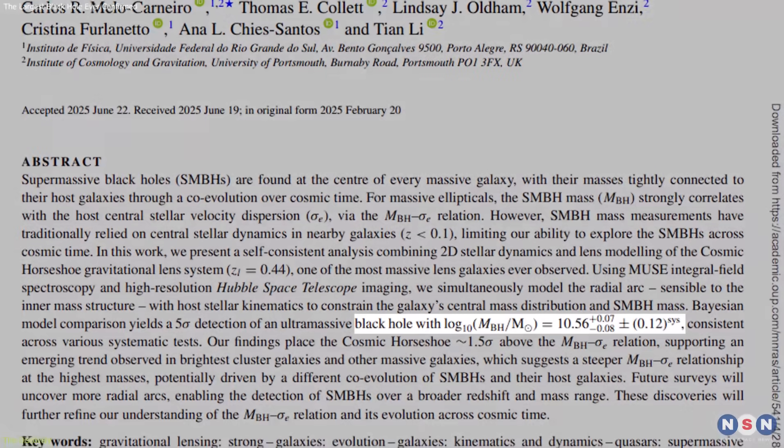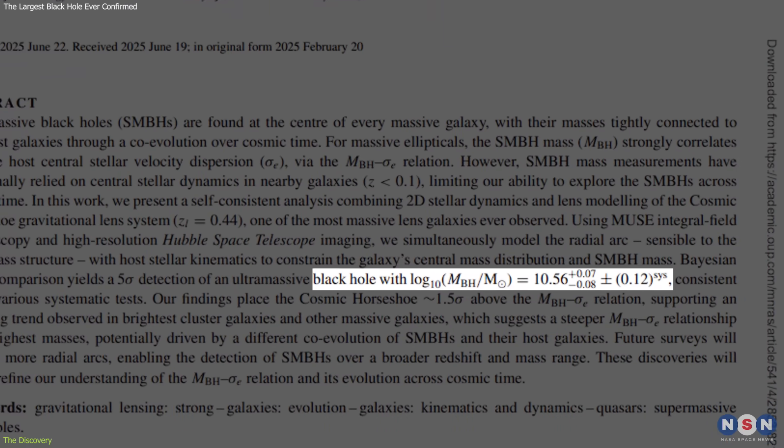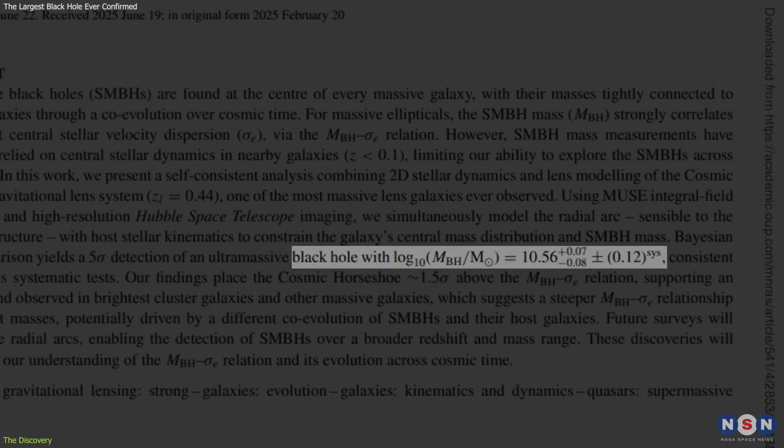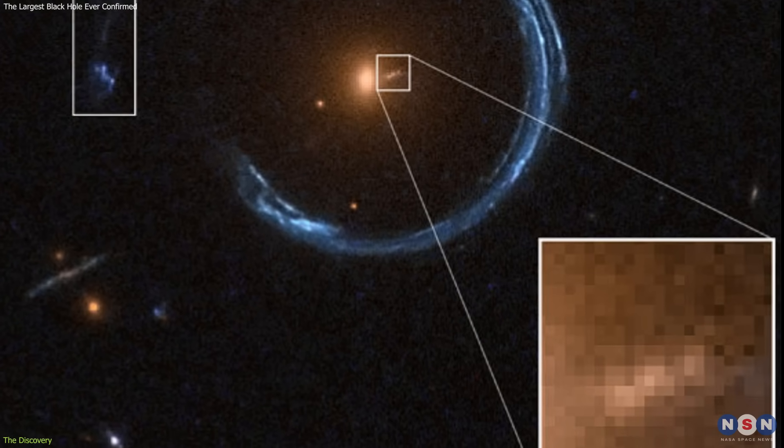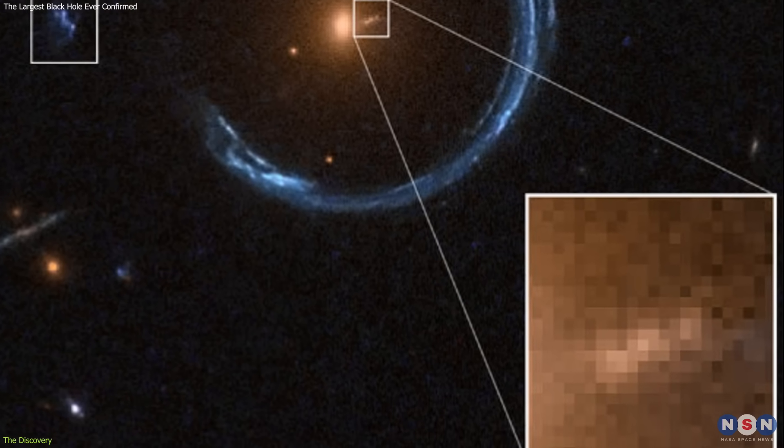The result? A black hole weighing in at about 36 billion solar masses. This figure makes the cosmic horseshoe black hole one of the largest, reliably measured to date.